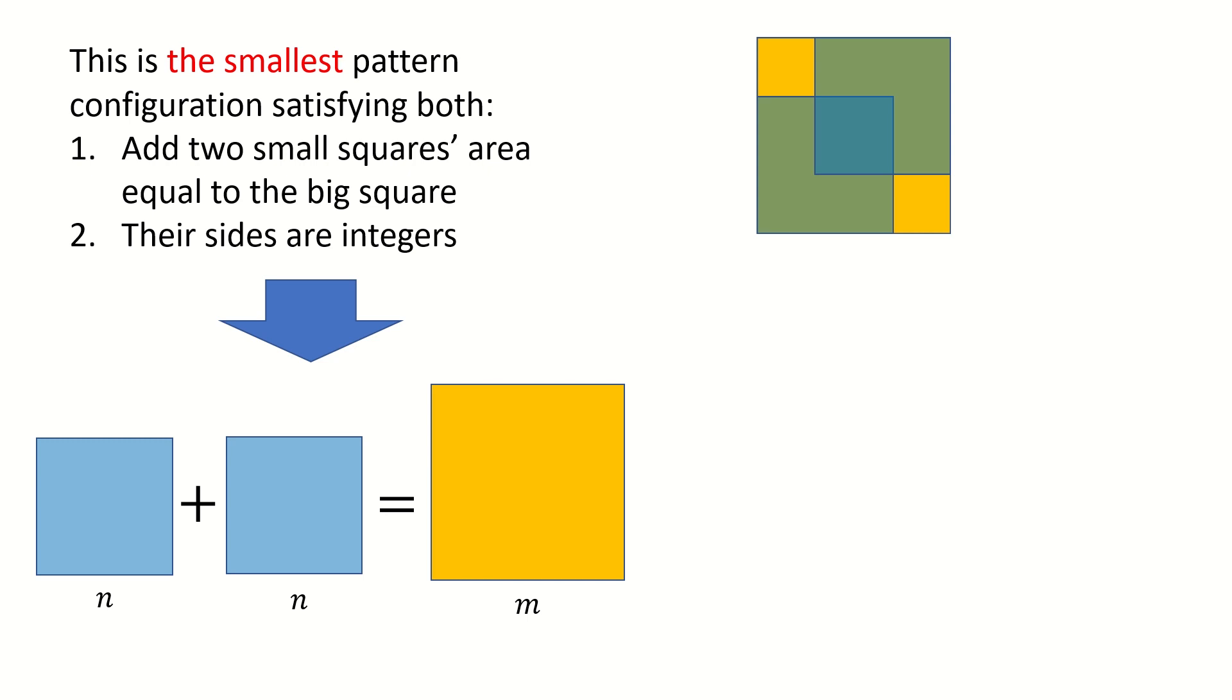And we have two small yellow squares uncovered. So that means the sum of the area of these two small yellow squares equals the area of this blue square.